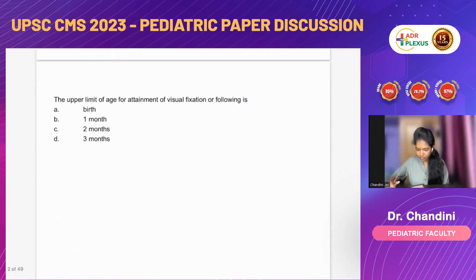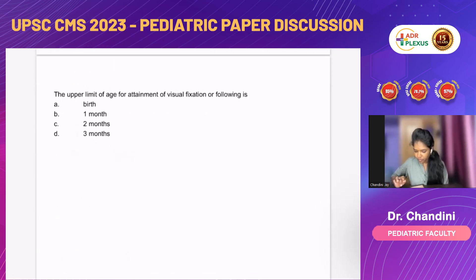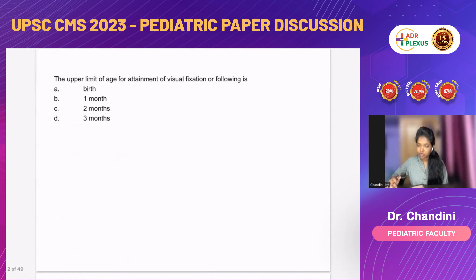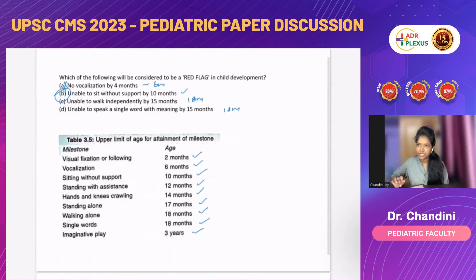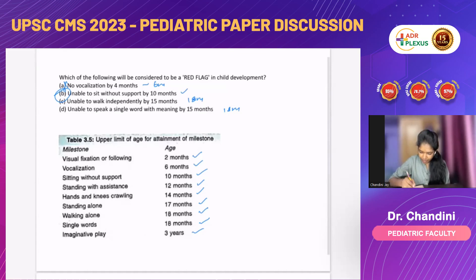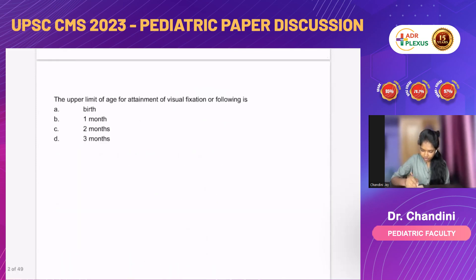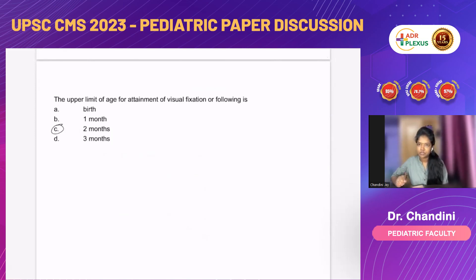The first question: the upper age limit of attainment of visual fixation or following — is it at birth, one month, two months, or three months? This question was already discussed in class. These are the upper ages of attainment of certain milestones — meaning, till what age we can wait for a milestone to be attained. The upper age of attainment of visual fixation is around two months. So, the answer is two months — option C.